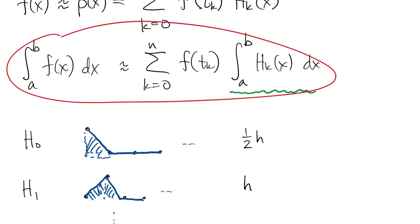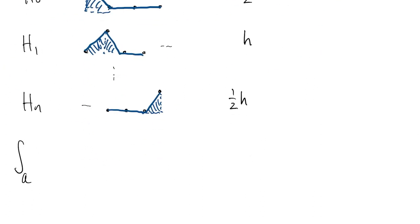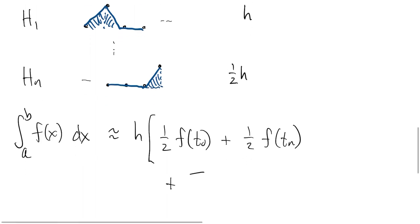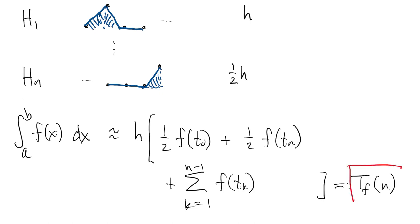Going back to the formula, we put in the weights I just found, and pulled out the common factor of h in all of them. The first and last function values get 1 half weight, and the rest of the function values are just added in together. I'll call this result T sub f as a function of n, the number of subintervals. And this is the trapezoid formula.